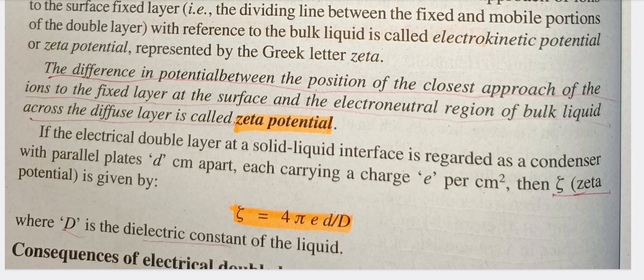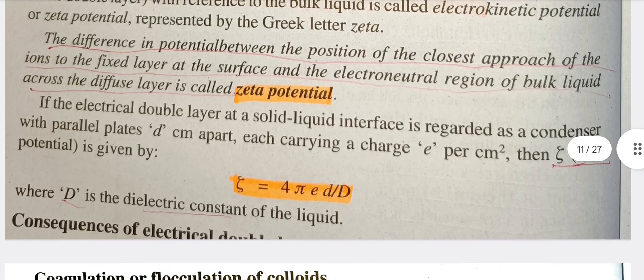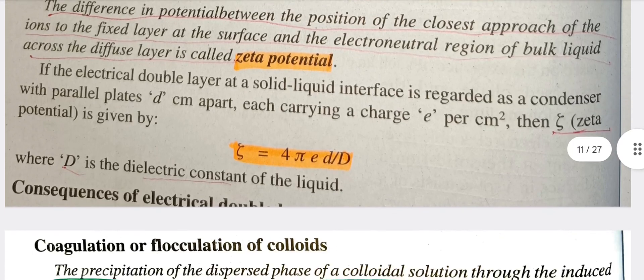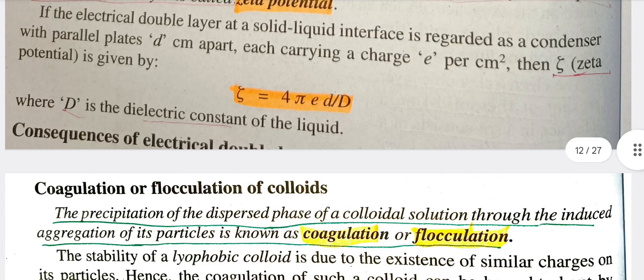In that formula, the small d refers to the distance, D refers to the dielectric constant, E refers to the charge, and 4π is a constant.